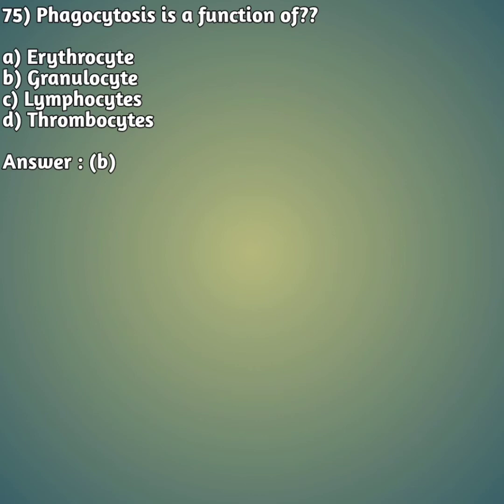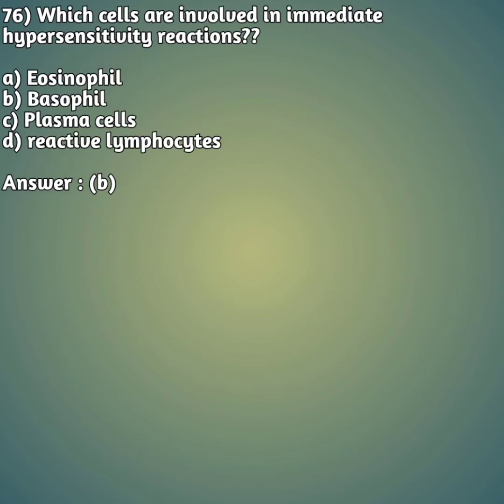Moving on to our 75th question: phagocytosis is a function of - option A: erythrocytes. Option B: granulocytes. Option C: lymphocytes. Option D: thrombocytes. Phagocytosis is the engulfing of foreign particles. The function of phagocytosis is carried out by option B - granulocytes.